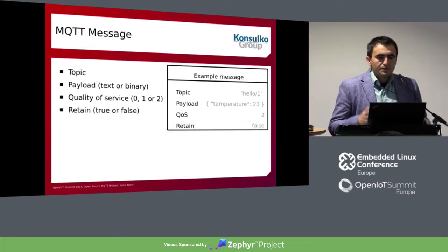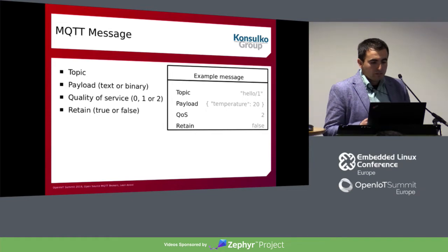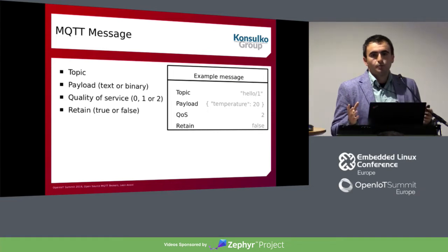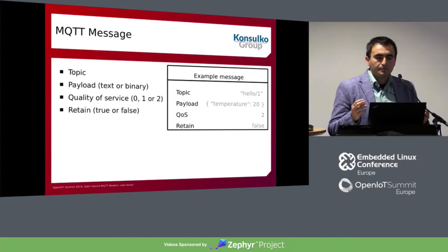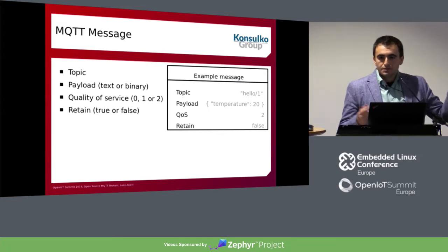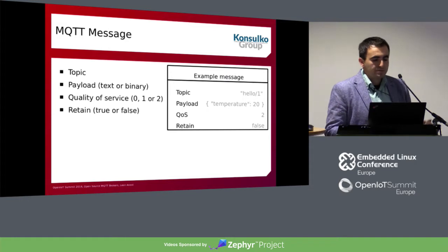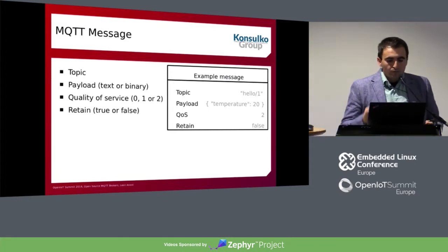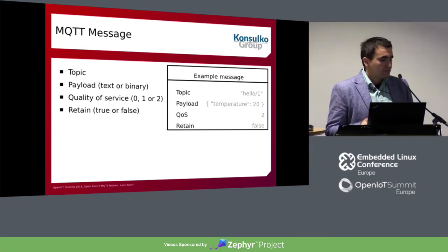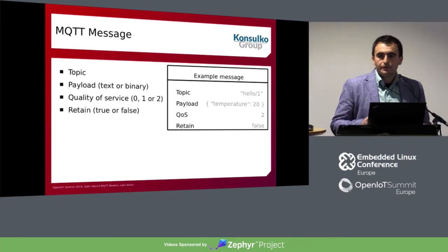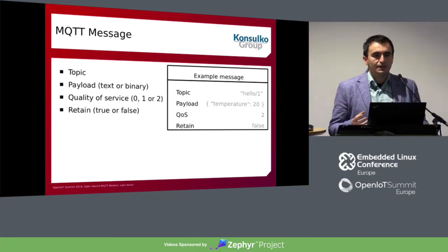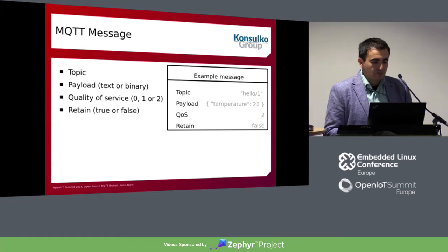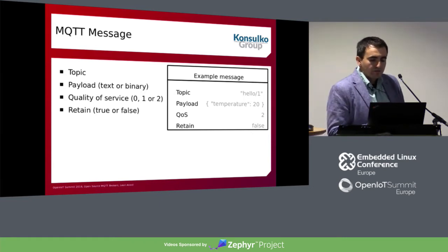An MQTT message has a few key ingredients. A topic, which is mandatory — pretty much the equivalent of a URL address if you're browsing a website. A payload, which could be text or binary — basically the information being delivered by the message. There is also a quality of service and a retain flag. Here's a simple example showing a topic and a JSON-encoded payload, sent with quality of service 2 and retain flag false.